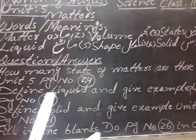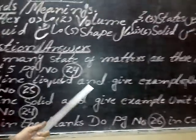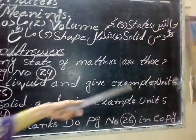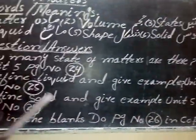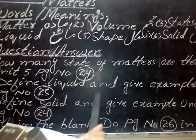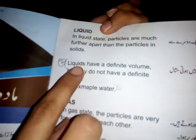Question number 2: Define liquid and give an example. Unit number 5, page number 25. Liquids have a defined volume but they do not have a defined shape. For example, water.